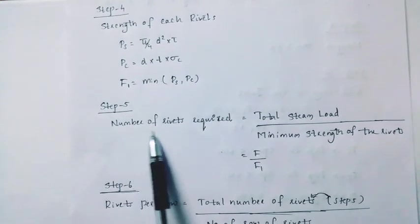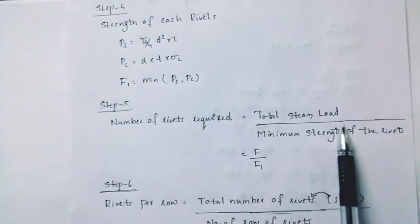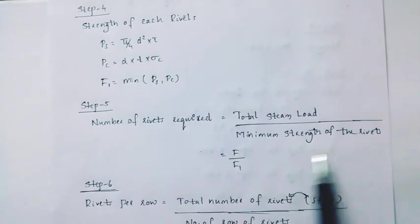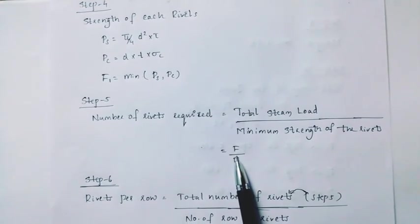Step 5. Number of rivets required, total steam load divided by minimum strength of rivets. That is f divided by f1.